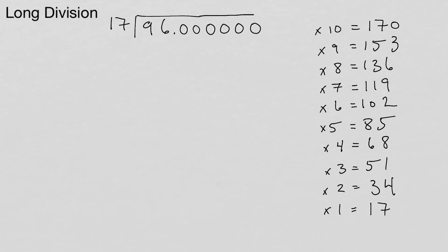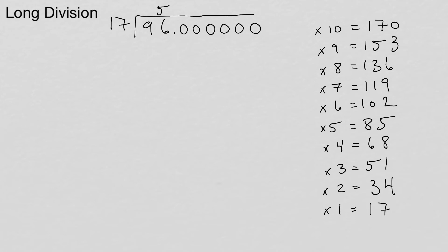17 goes into 96 how many times? Looking at the chart, 96 is between 85 and 102. Since 96 is in the middle we take the number below it, which is 5. So 5 times 17 is 85 — we write 85 and subtract. 6 minus 5 is 1, 9 minus 8 is 1, giving us a remainder of 11.